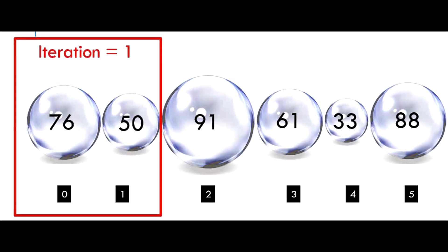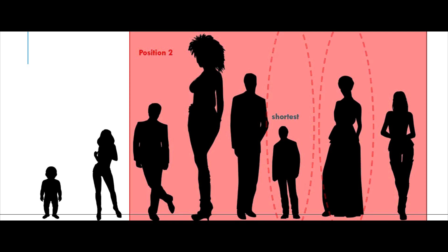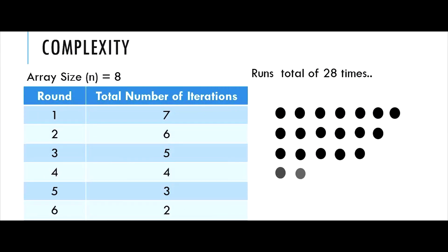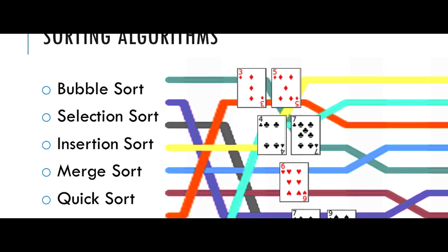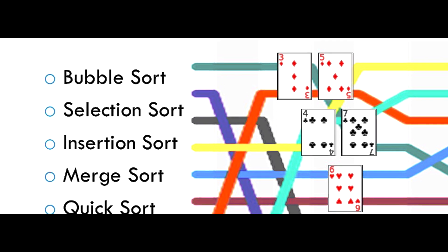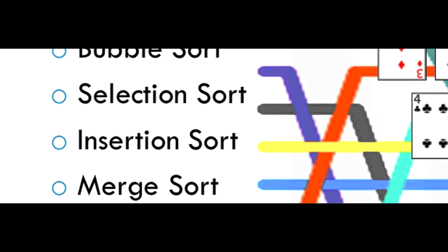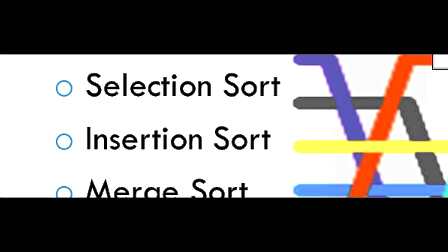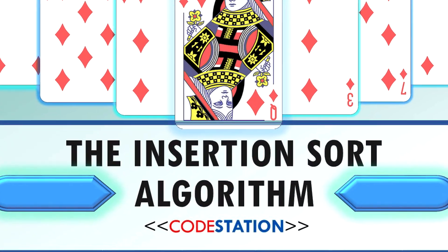Previously, we elaborated on bubble sort and selection sort. We understood why they are a quadratic algorithm with asymptotical complexity of order of n-squared. In this video, we will look into another algorithm which is also quadratic, but usually gives us a much better performance: the insertion sort.